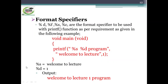Format specifiers define the type of data to be printed on standard output. %d, %f, %s, and %c are the format specifiers to be used with the printf function as per requirement, as given in the following example.